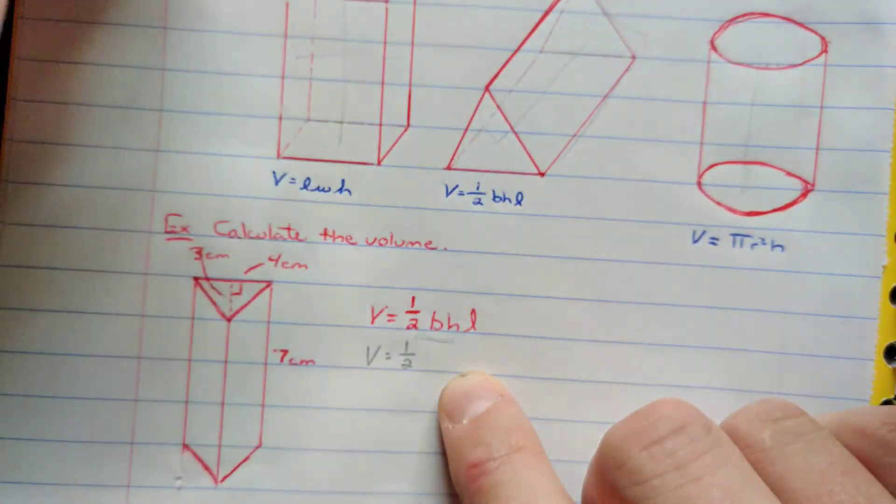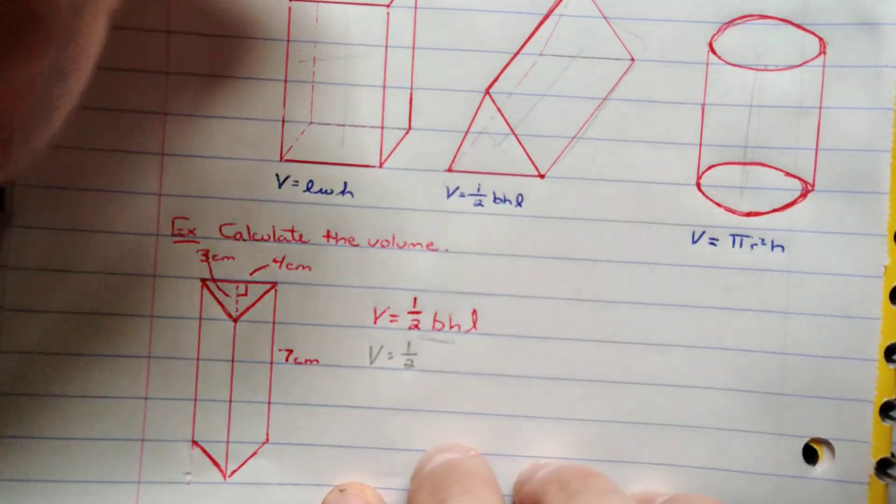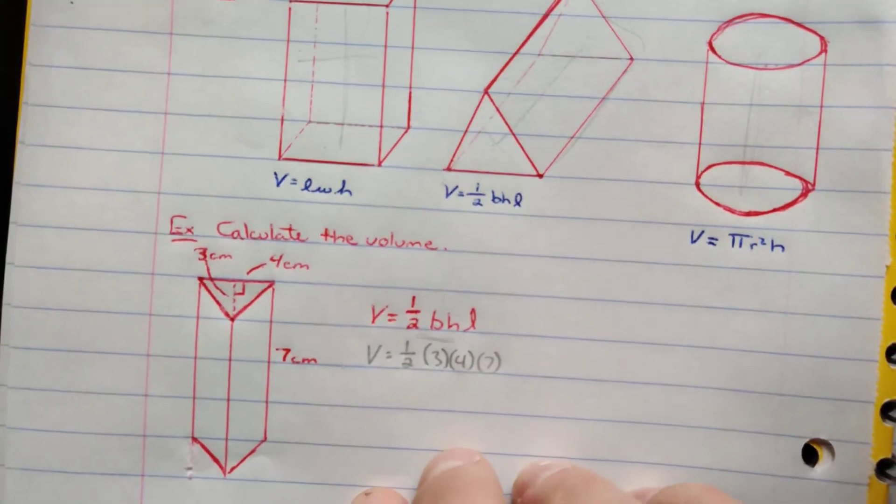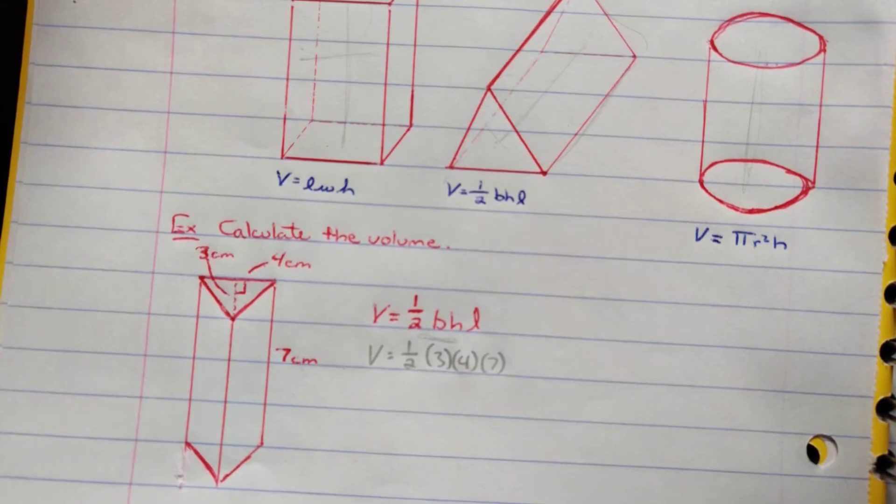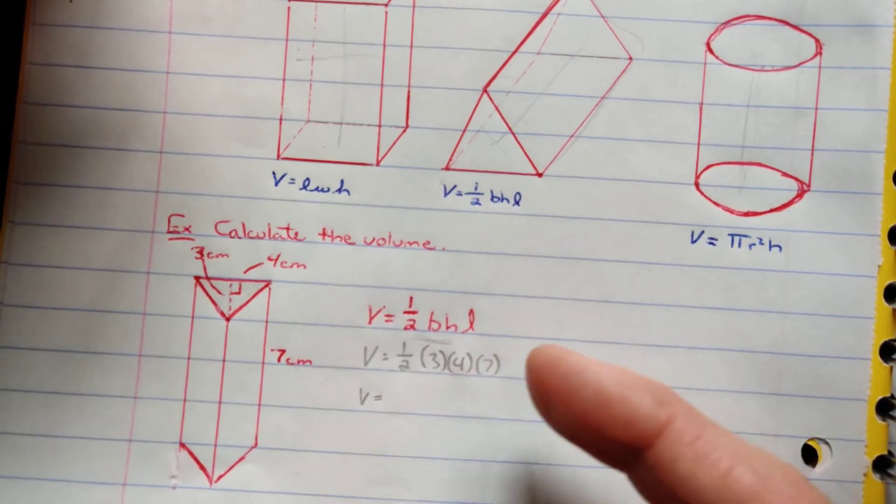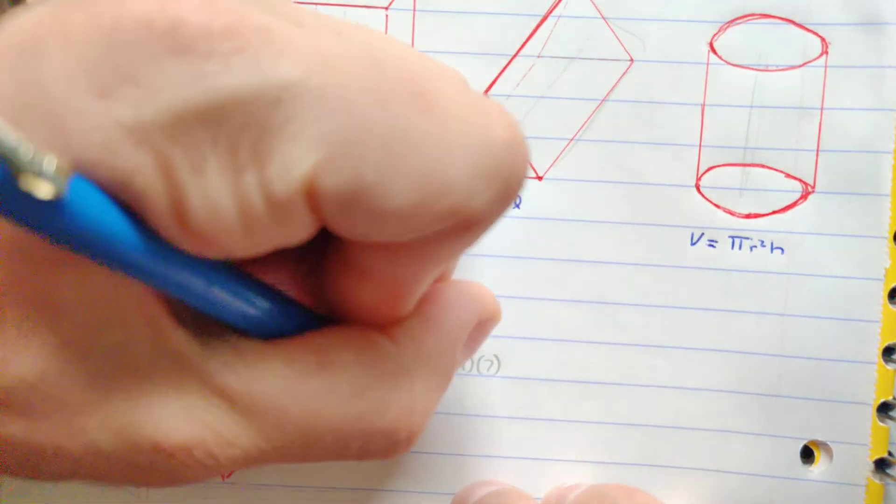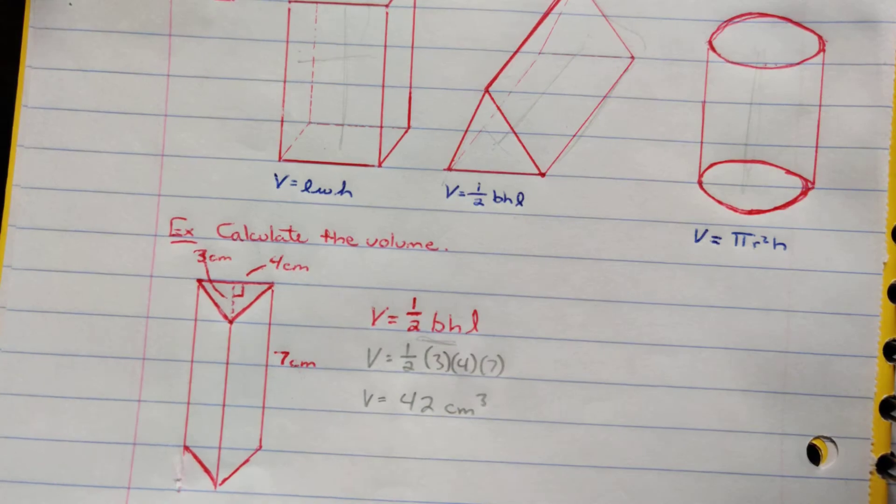And it doesn't even matter if you put them in that order because multiplication, three times four times seven is the same as four times three times seven or seven times four times three. But we'll do three times four times seven. As long as we multiply our three dimensions together, it does not matter. And so we have one-half times three times four times seven. We can do this all in one step if we want. If you want to type it in your calculator, one-half is one divided by two times three times four and then times seven. And when we do that, 21 times two is going to be 42. So we're going to get 42. And in this case, it's going to be centimeters cubed or cubic centimeters.